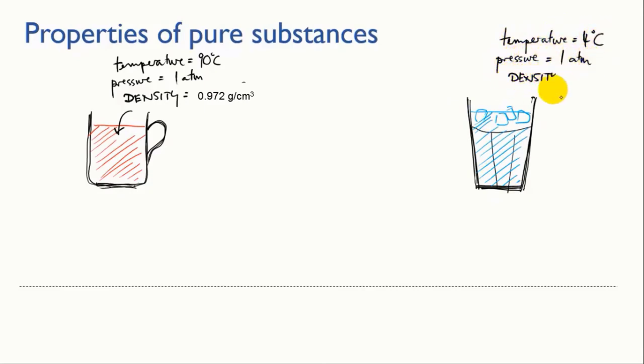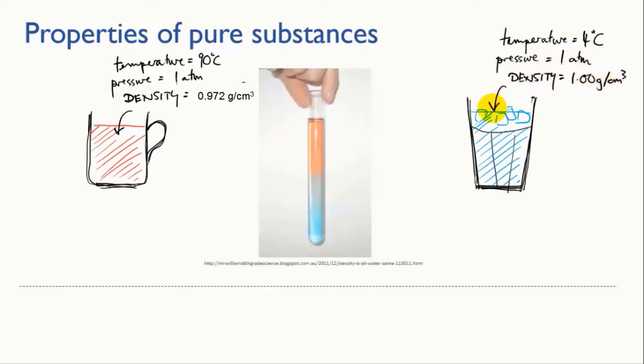The two containers hold the same pure substance, but because they're at different temperatures, their densities are different. This is why it's possible to float hot water on cold water.